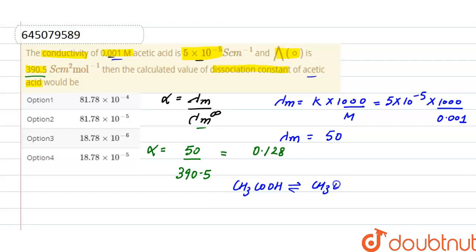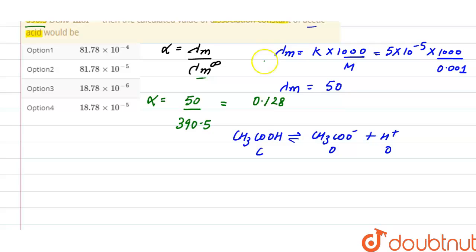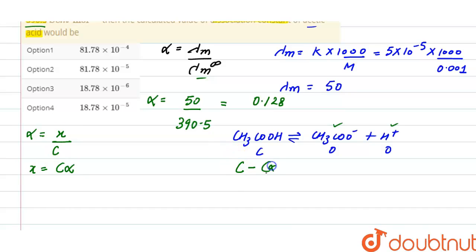Suppose initially the concentration of CH₃COOH is C, and the concentrations of the ions are 0. After some time, CH₃COOH dissociates and converts into ions. Since degree of dissociation equals dissociated concentration divided by total concentration, the dissociated concentration equals C·alpha. So the remaining CH₃COOH is C minus C·alpha, and the ion concentrations are each C·alpha.